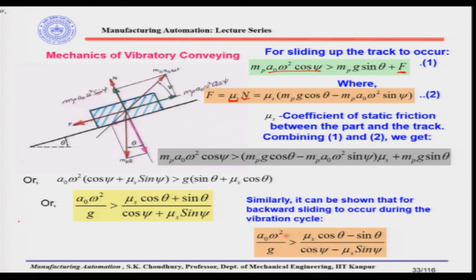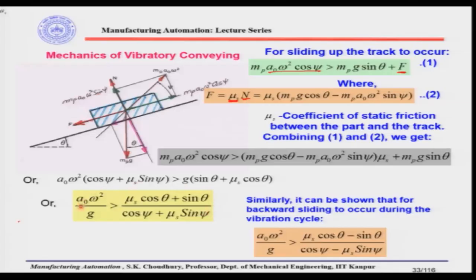These conditions are important because if the forward sliding equation is satisfied, the part will go up. The vibration amplitude or frequency may not be sufficient for the part to go up, so you always have to ensure these conditions are satisfied. If the backward condition is satisfied without the forward one, the part will slide down instead of going up.